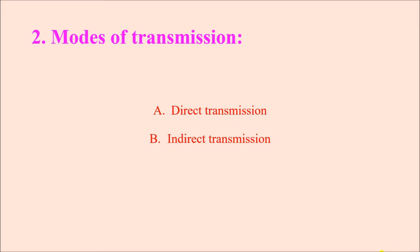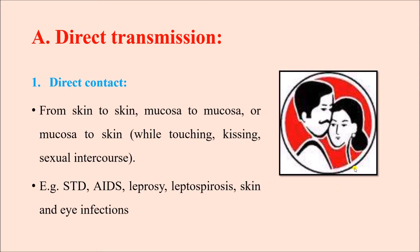Today we will talk about different modes of transmission of infection. We can have direct transmission or indirect transmission, and under these larger headings there are different types of modes. Starting with direct transmission, the first one is direct contact, which can occur from skin to skin, mucosa to mucosa, or mucosa to skin, and occurs during activities like touching, kissing, or sexual intercourse.